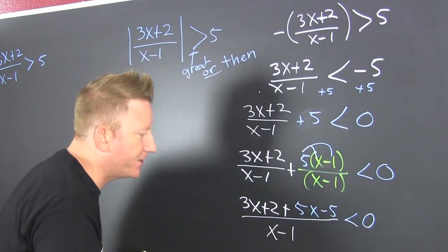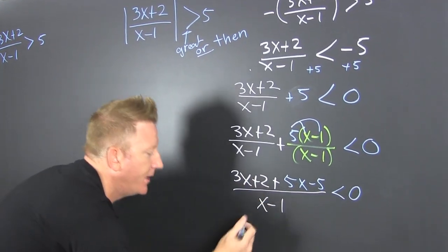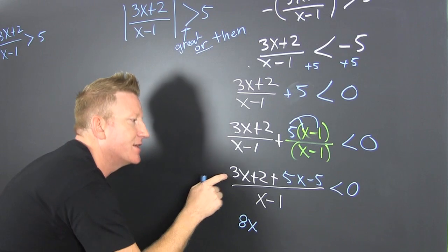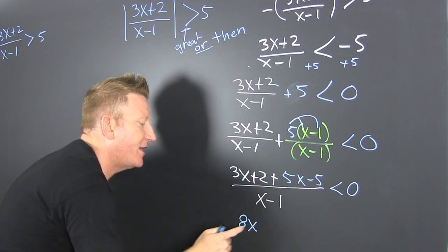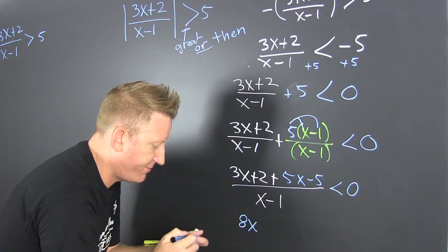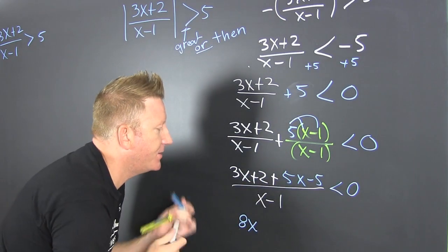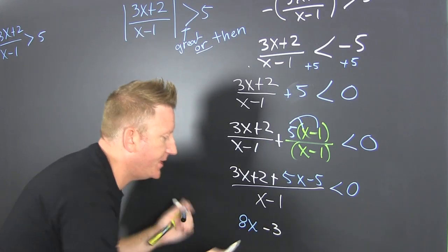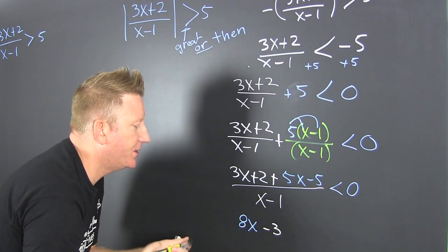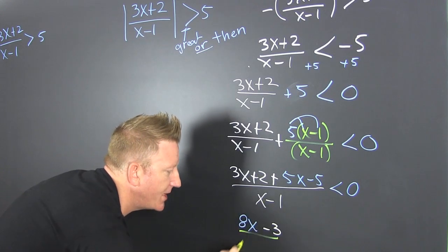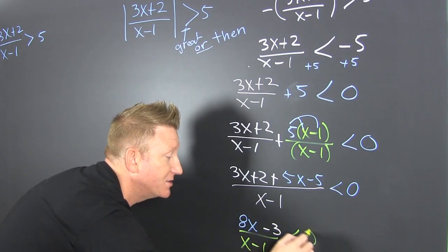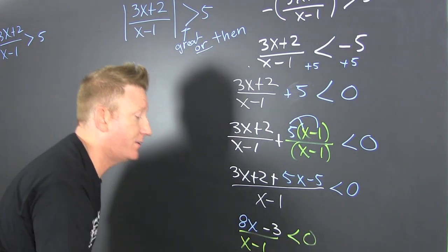I gather, collect, and combine. A 3x and a 5x is an 8x. A 2 and a minus 5 — that's going to be a minus 3. And then we see it's all over that denominator (x - 1). That's all still smaller than 0.